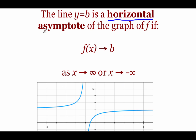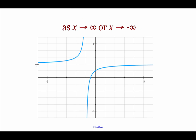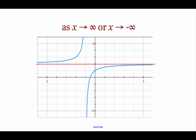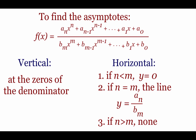The other type is a horizontal asymptote. For this, we look at x values approaching infinity or negative infinity — heading off to the right or left on the graph. If our function values start to approach a specific number b, we say the line y equals b is a horizontal asymptote — a flat horizontal line that kind of splits our picture in two. It is possible for a graph to have both vertical and horizontal asymptotes at the same time.